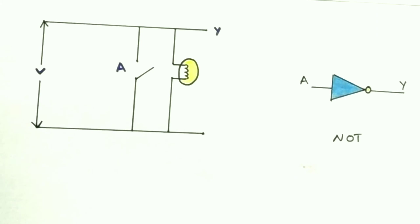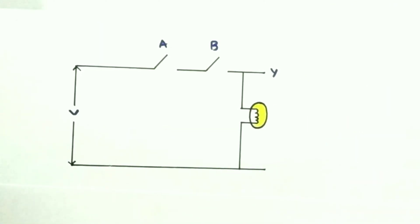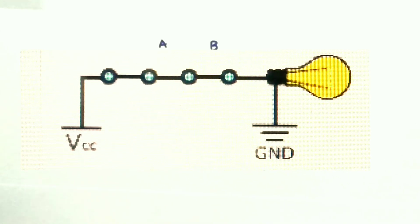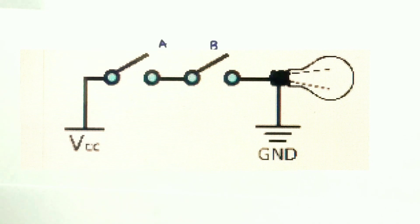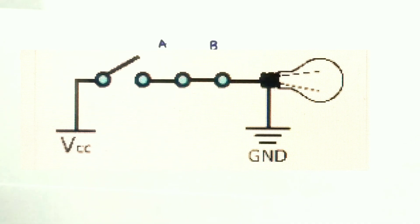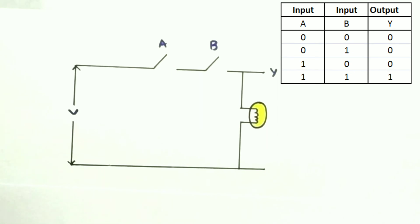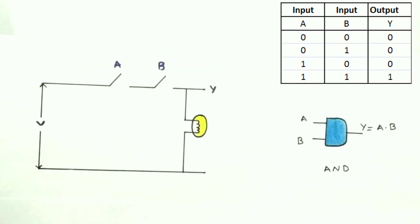Now let's take more than one switch and arrange them in series and parallel to check the functionality. With two switches A and B connected in series, the bulb will glow only when both switches are closed — that is, A = 1 and B = 1 gives Y = 1. If any switch is open, the current will not flow and the bulb will not glow. So two switches in series behave as an AND gate.